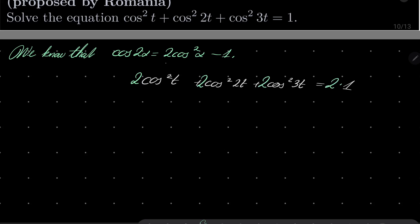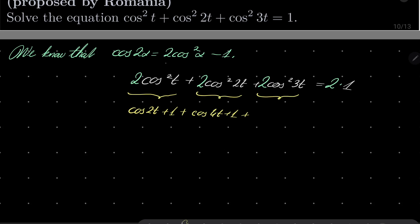I will multiply everything by 2. Now, 2 times cosine squared of t can be replaced by cosine of 2t plus 1. This part can be replaced by cosine of 4t plus 1. And the last part can be replaced by cosine of 6t plus 1, which equals 2.